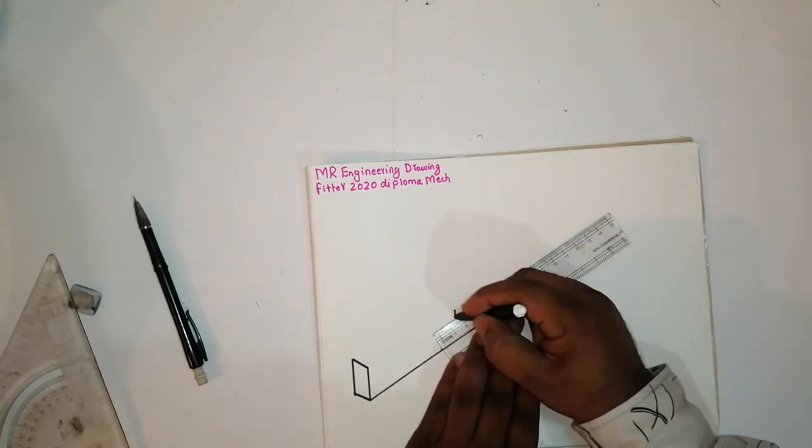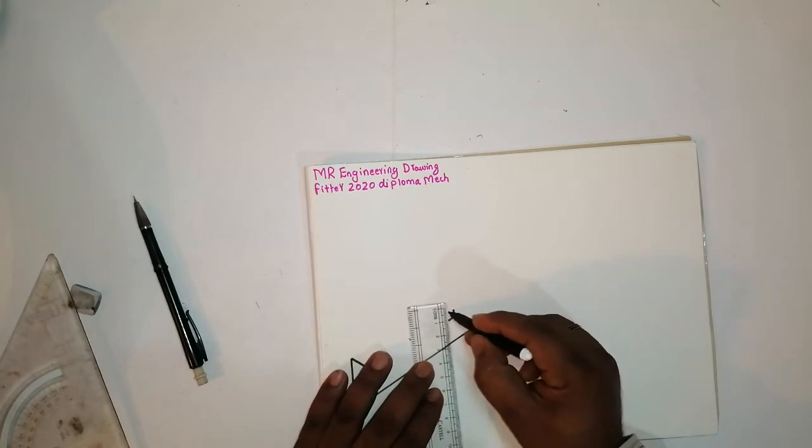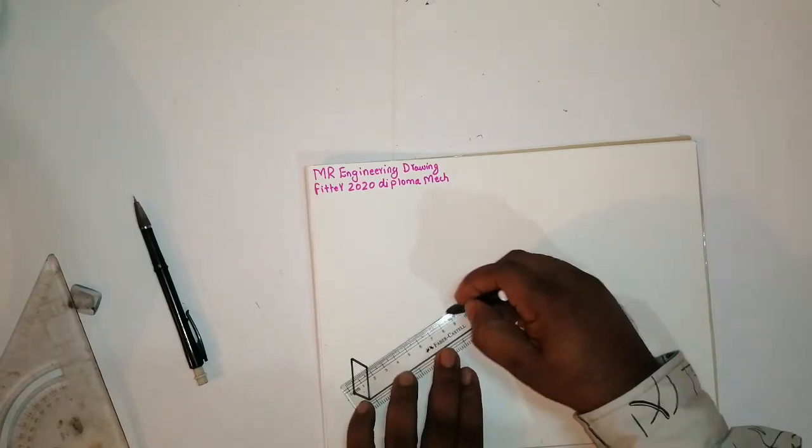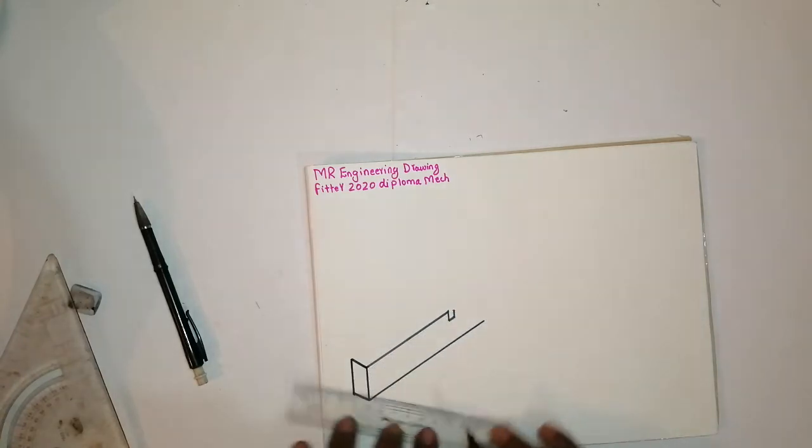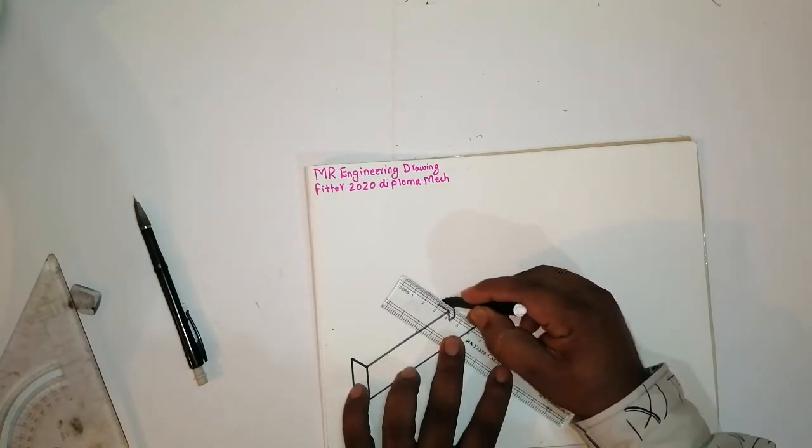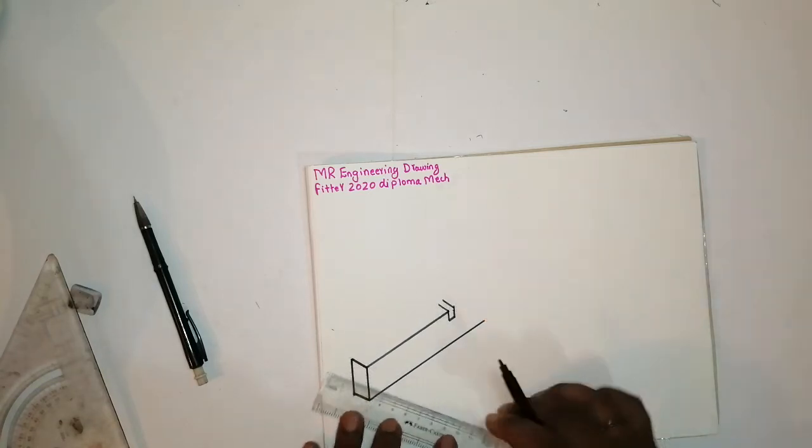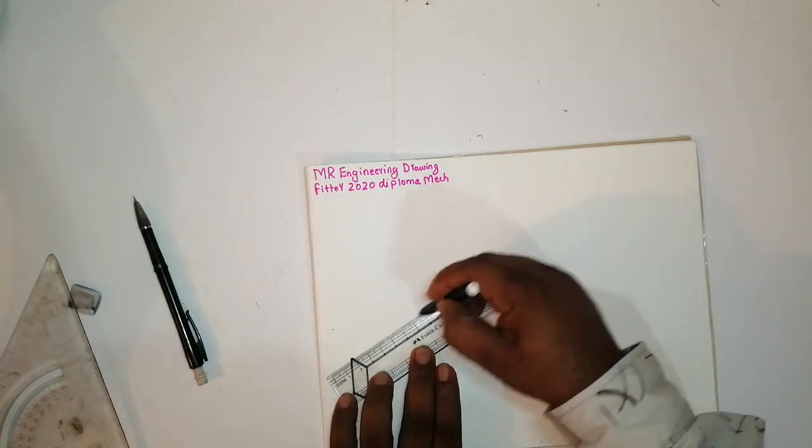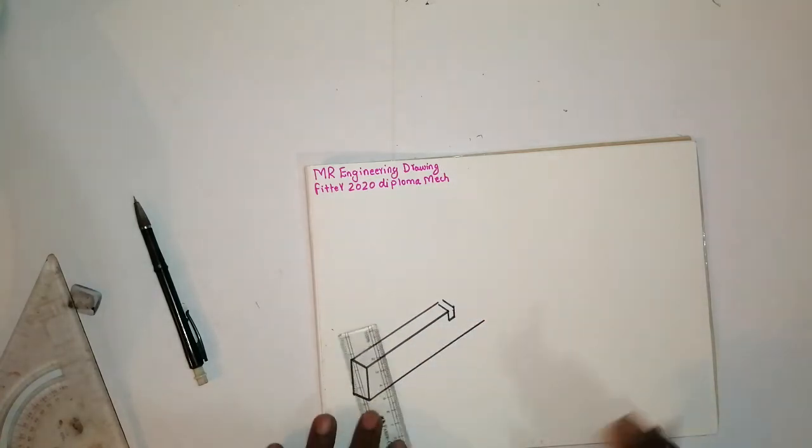I have taken 5, then the 5 like this. Then join this portion like this. See, this is a groove. Okay friends. And join this line like this. Okay.